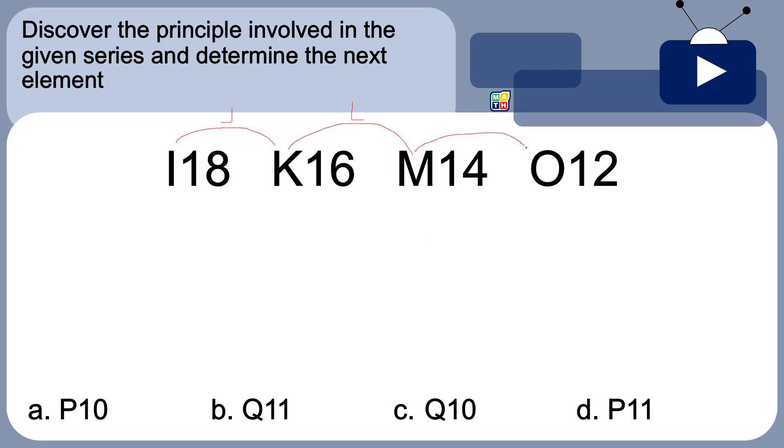We have here M to O. So, we have skipped here N. So, if we're going to follow this principle for our next element, O should skip P so that our answer should start with Q.